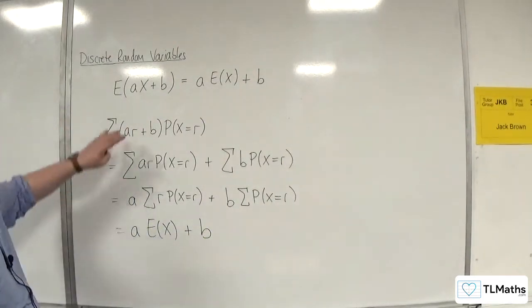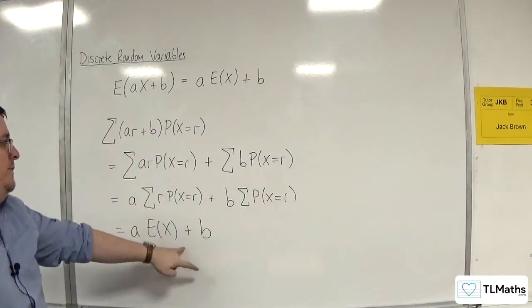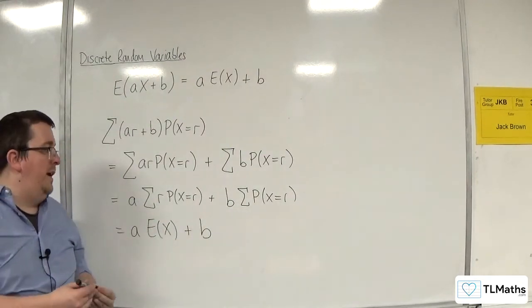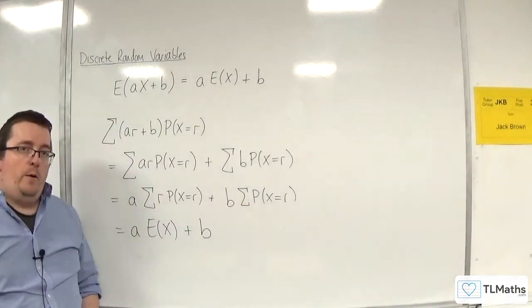And so what we've shown is that E(ax + b) is aE(x) plus b. And so we can use this result from now on.